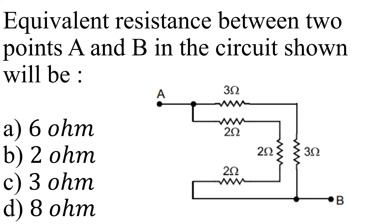Equivalent resistance between the two points A and B in the circuit shown below will be option C, 3-ohm. So I hope this helped you out. I hope you learned something today. Have a great day everyone. Thank you very much.